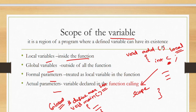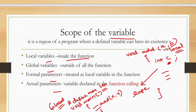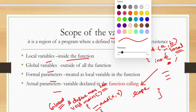Formal parameters are treated as a local variable in the function. In this function, if I am passing some value a, b — and here I am calling add with x, y — this a and b, these formal parameters, are only accessible within the function. This is formal parameters.